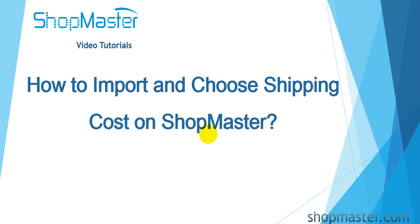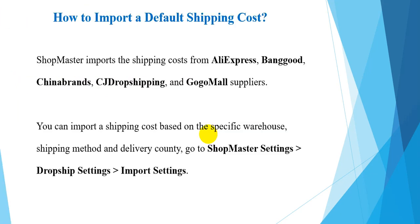Hello everyone. Today I will show you how to import and choose shipping costs on Shellmaster. Shellmaster imports the shipping costs from AliExpress, Banggood, China Brand, CJdropshipping, and many more suppliers. You can import the shipping costs based on the specific warehouse, shipping method, and delivery country. You can go to Shellmaster settings to set it up.